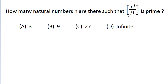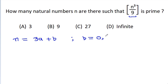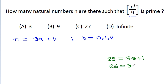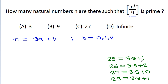We have the greatest integer of n cubed by 9. We can take n equal to 3a plus b, then b will be equal to 0, 1, or 2. For example, 25 equals 3 times 8 plus 1, 26 equals 3 times 8 plus 2, 27 equals 3 times 9 plus 0, and 28 equals 3 times 9 plus 1. So b cannot be equal to 3 or greater than 3.